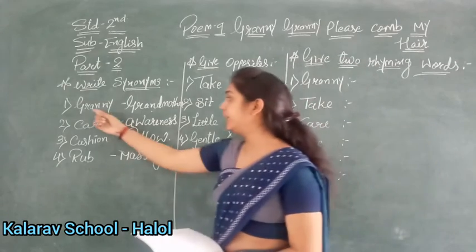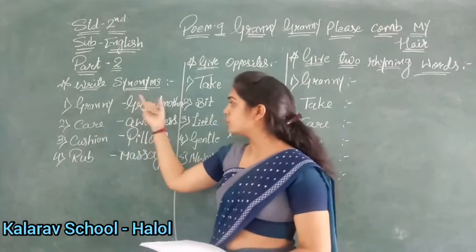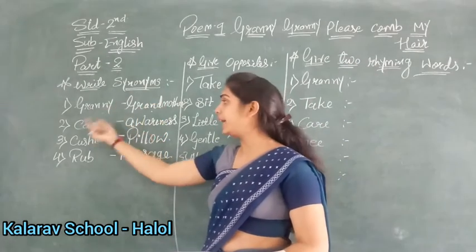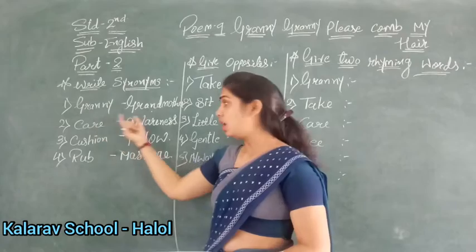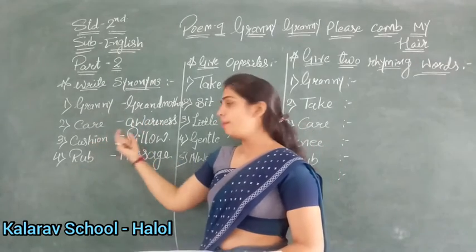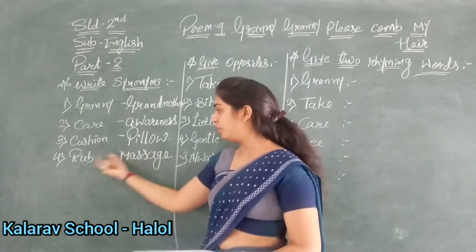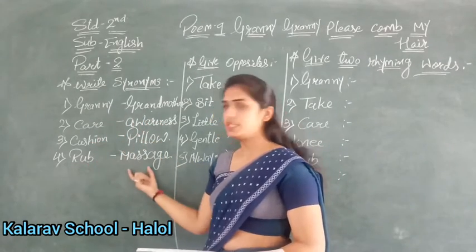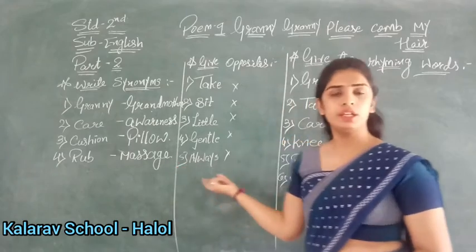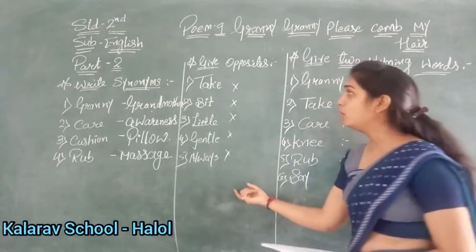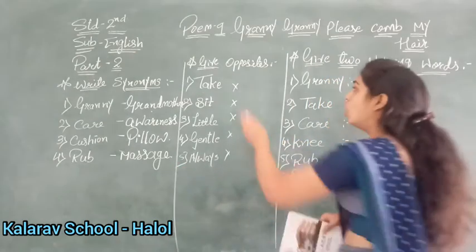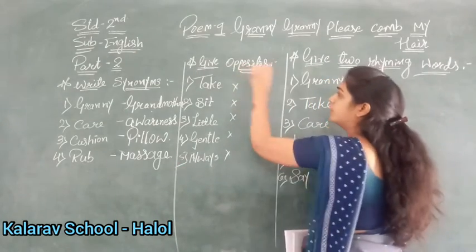So let's recap. First one: granny — grandmother. Care — awareness. Cushion — pillow. Rub — massage. Understood? Yes. Now next we are moving further with opposite words.